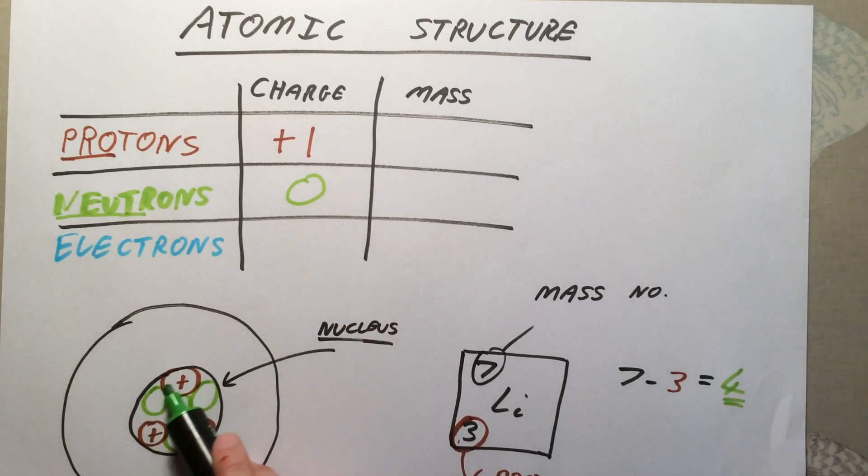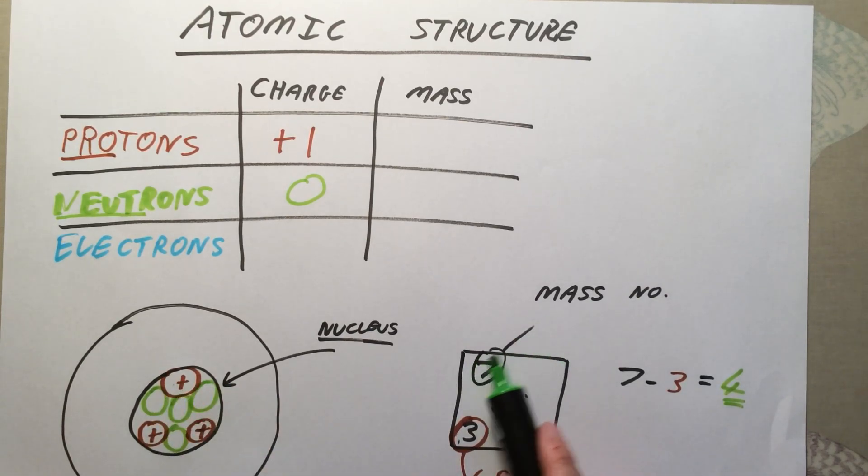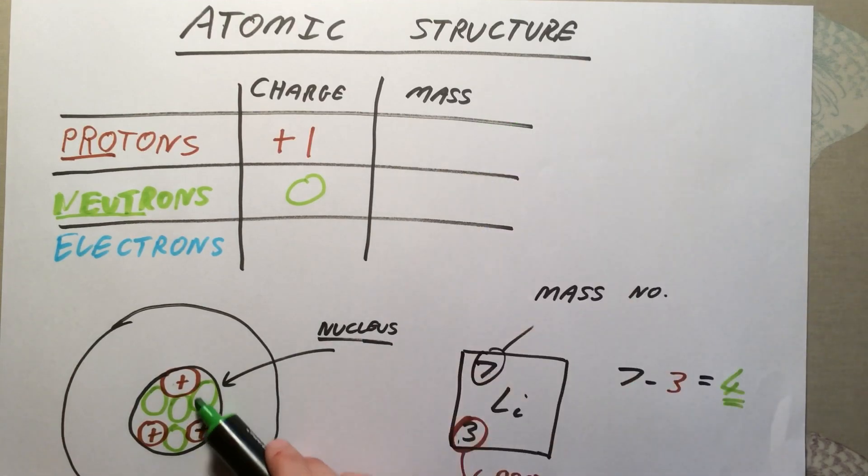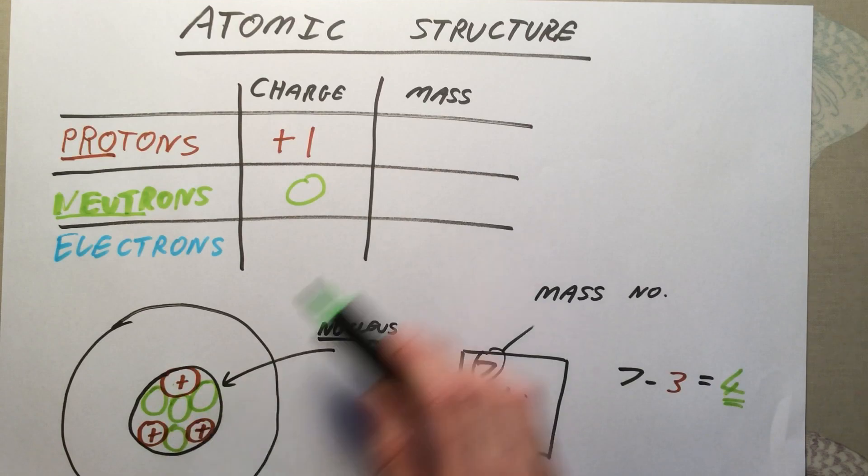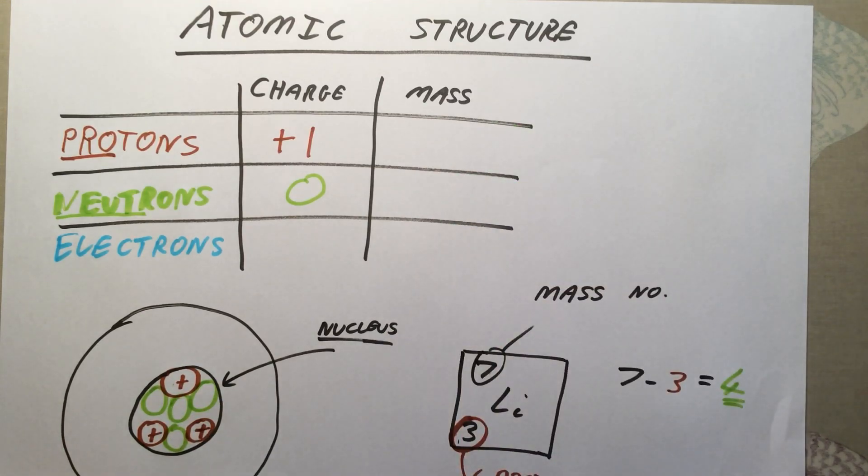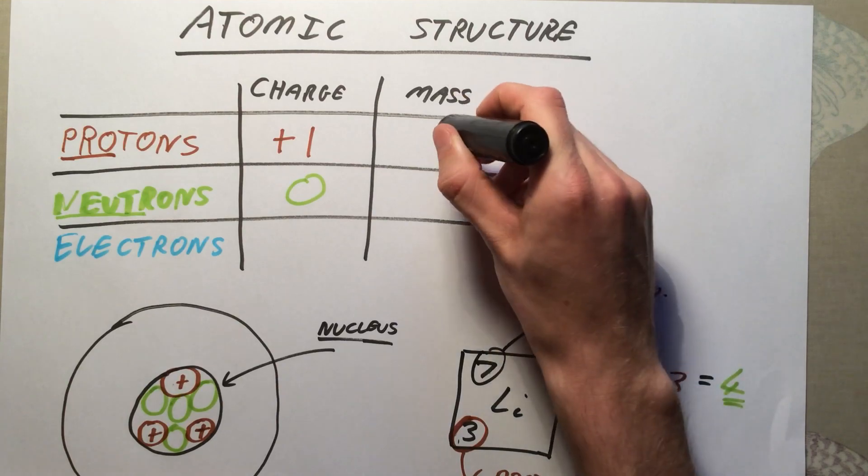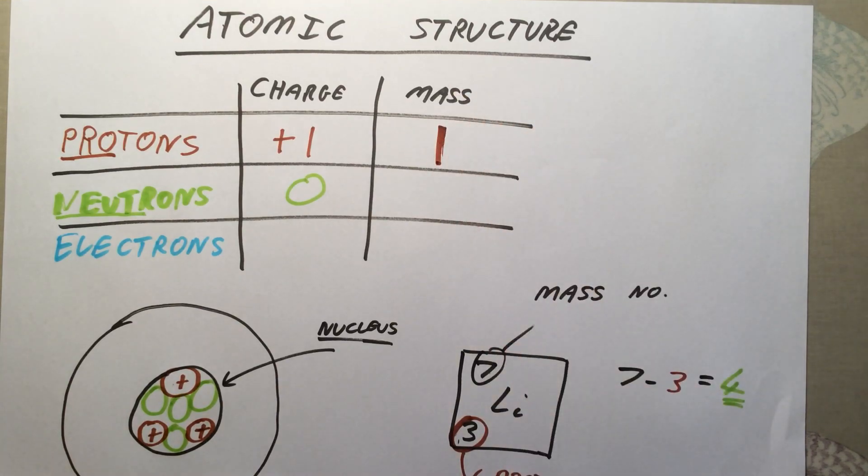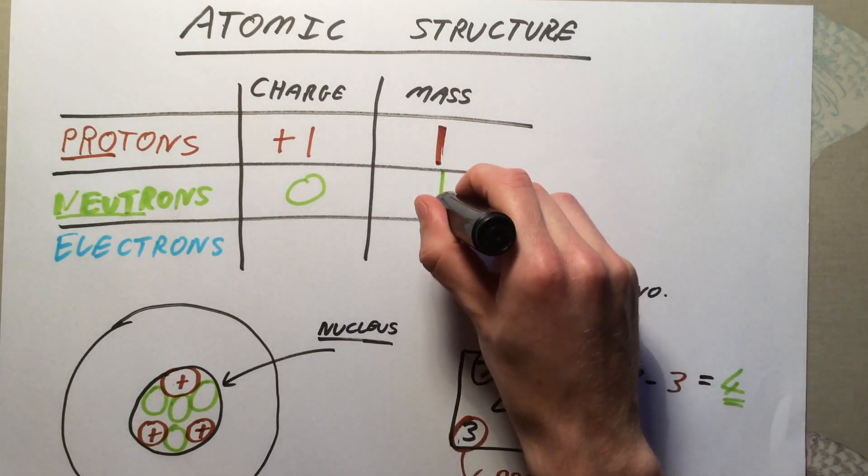So in total, you've got seven particles in the nucleus of your atom. That is why our mass number is seven. What this tells us is that these particles in the nucleus contribute the vast majority of the mass of our atom. The reason I've counted protons and neutrons as one is because both of these contribute one to the mass of the atom. We say they have a relative mass of one.